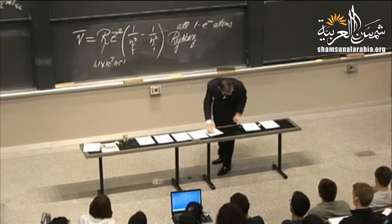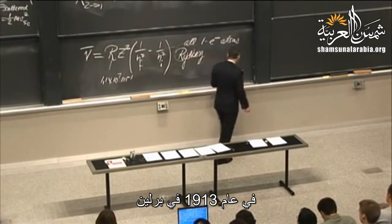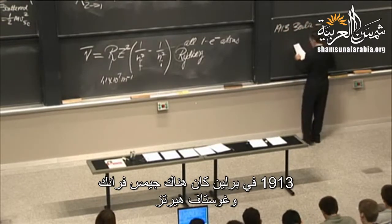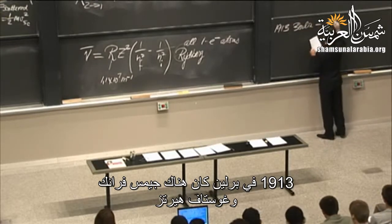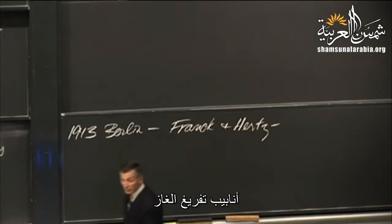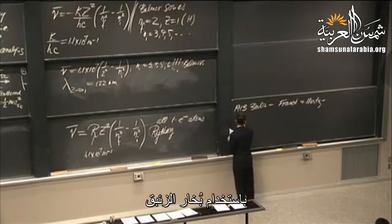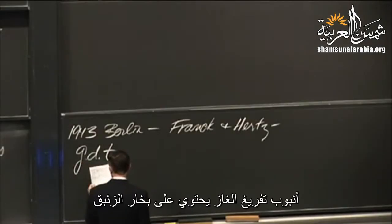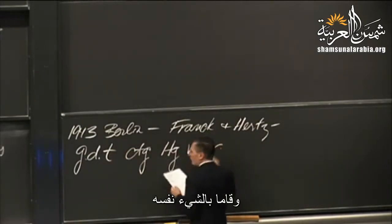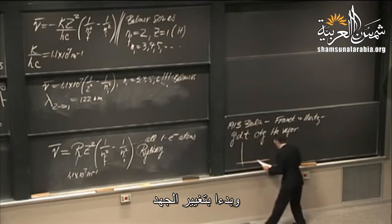In 1913 in Berlin — the same year Bohr published his paper — James Franck and Gustav Hertz were conducting experiments on gas discharge tubes. Only they filled their tube with mercury vapor instead of hydrogen. They put it between electrodes connected to a power supply and started varying the potential.